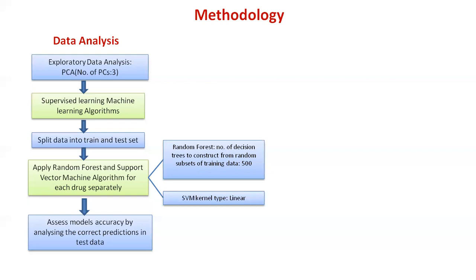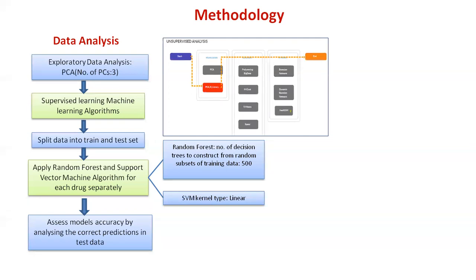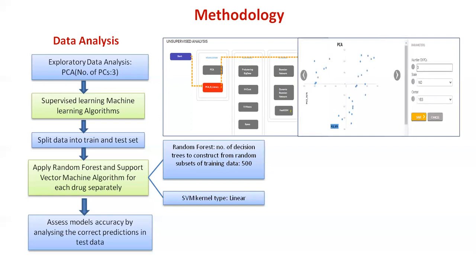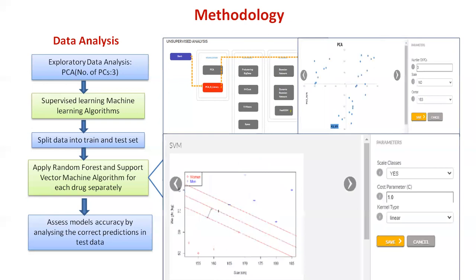Random forest and support vector machine algorithms were applied to the train and test datasets. The number of decision trees constructed from random subsets of training data was set to 500, and the SVM kernel type was set as linear. Confusion matrix for training data, as well as precision and prediction accuracy on test sets, were assessed to determine the accuracy of the machine learning models.